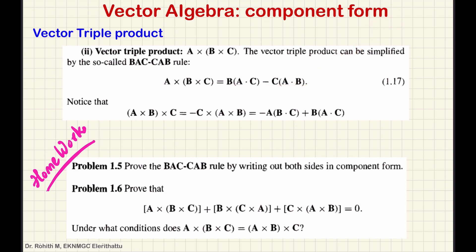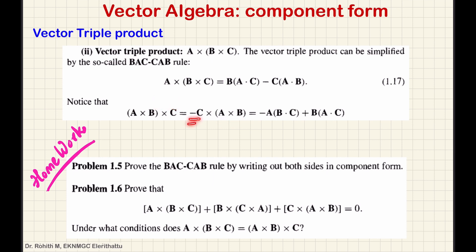Using the BACCAB rule, the first term has vector B multiplied by the scalar A dot C, and the second term has vector C multiplied by the scalar A dot B. All letters A, B, C are vector quantities (bold letters). Note that A cross (B cross C) is not equal to (A cross B) cross C — the commutative property gives a minus sign, so it equals minus of C cross (A cross B).